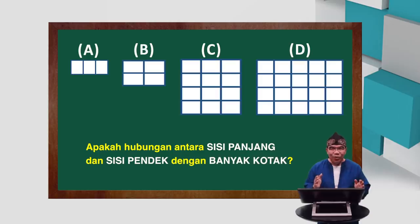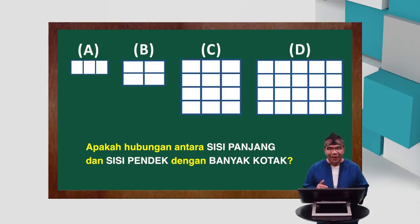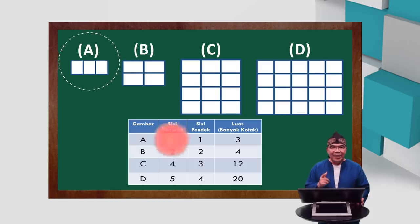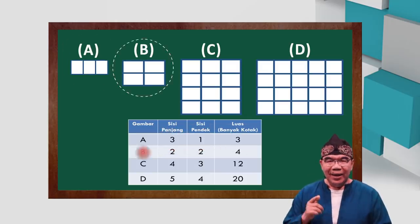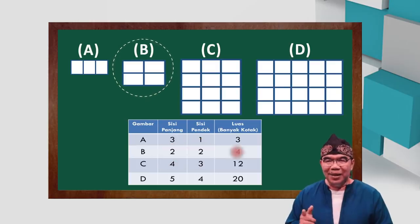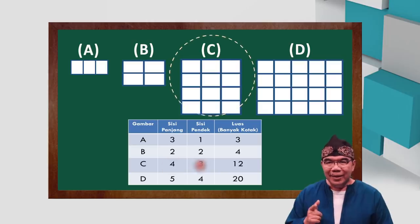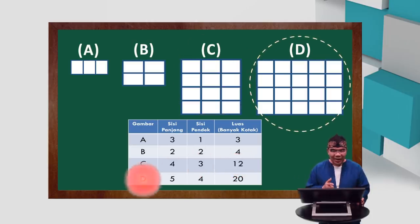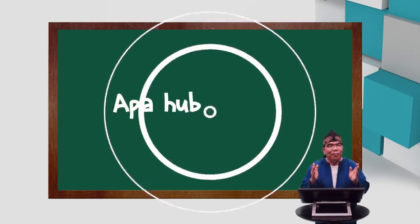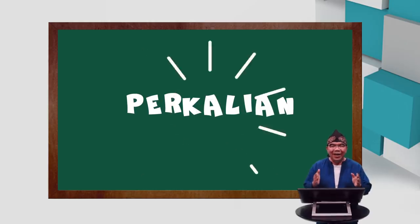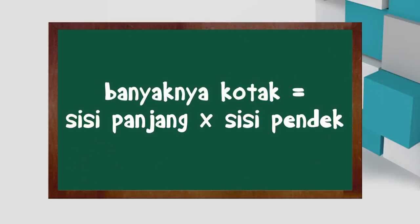Anak-anak, mari kita lihat hubungannya antara sisi panjang, sisi pendek dengan banyaknya kotak. Perhatikan: yang A, tiga kali satu menjadi tiga. Yang B, dua kali dua menjadi empat. Yang C, empat kali tiga menjadi dua belas. Yang D, lima kali empat menjadi dua puluh. Coba anak-anak di rumah, apa hubungannya? Ya, betul. Hubungannya adalah perkalian. Jadi, banyaknya kotak adalah perkalian dari sisi panjang dikali sisi pendek.